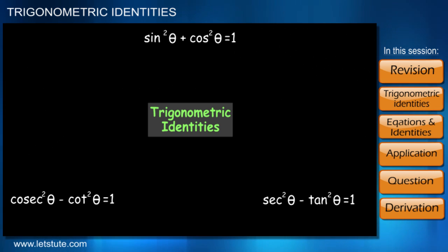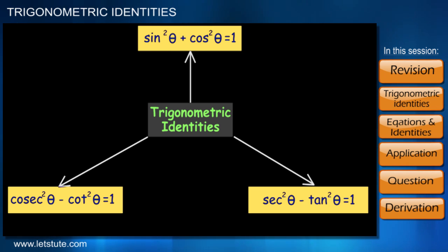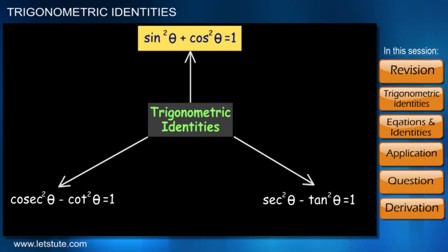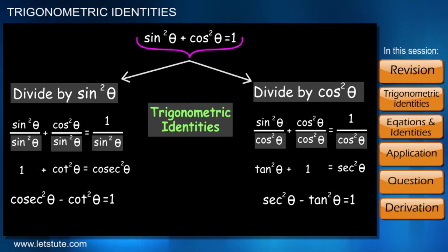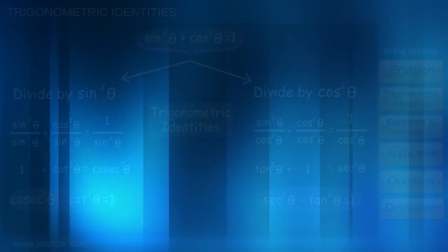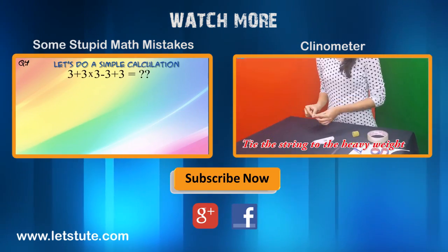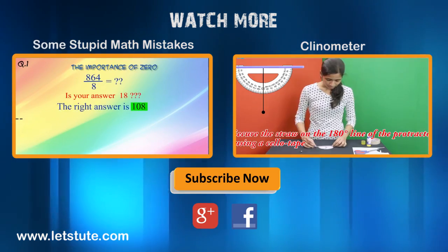Trigonometric identities are very important to learn and use properly. There are many different trigonometric identities, but these three are the ones we use most often. To remember all three, you only need to remember sin²θ + cos²θ = 1. To get the other two, just divide this by sin²θ and then by cos²θ respectively. If you understood the concept, share it with your friends, and if you have any queries or suggestions, please comment below.